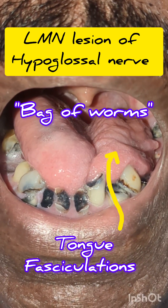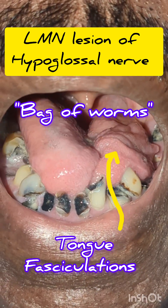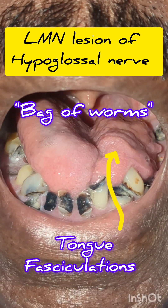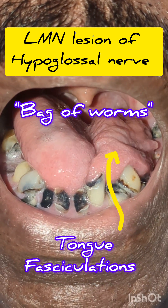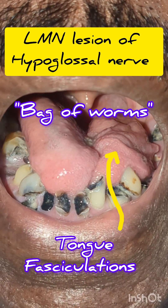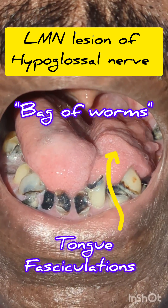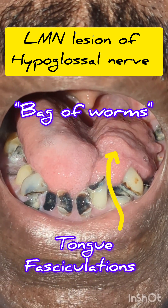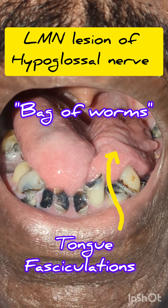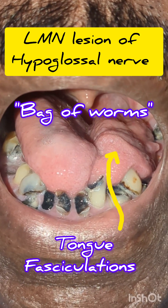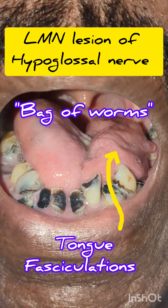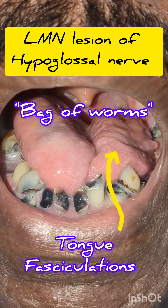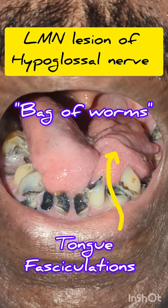So now, can you tell me — if you ask the patient to put out the tongue, where does it deviate to? Does it deviate to the right or to the left? Can you answer in the comment section? Thank you.